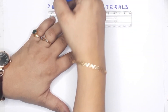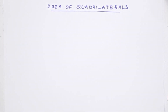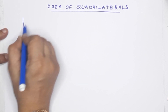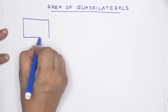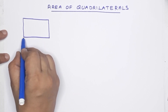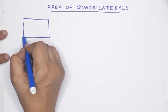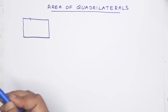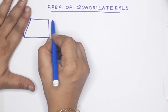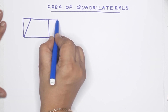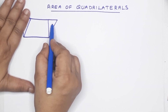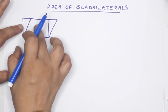The next topic is Area of Quadrilaterals. This is the first topic. It is the same area. It is a rectangle. This rectangle has the same length and breadth. This rectangle has the same area. It is a parallelogram.